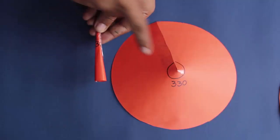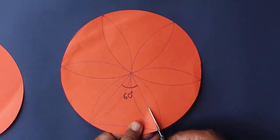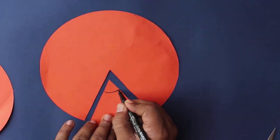Similarly, we will cut another sector of 60 degrees and 300 degrees. And we can follow the same process to make a cone. Again you can notice the slant height of all these cones is same.